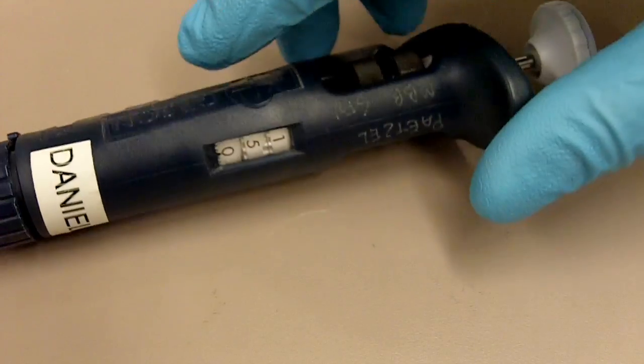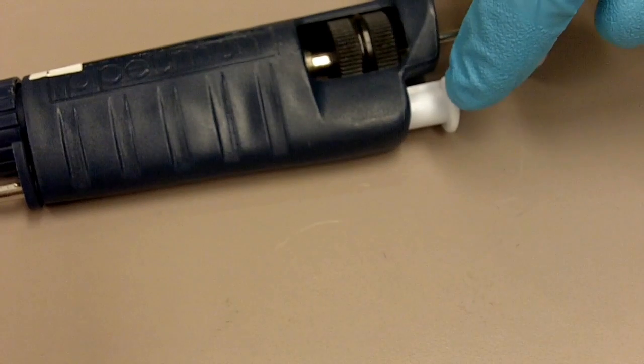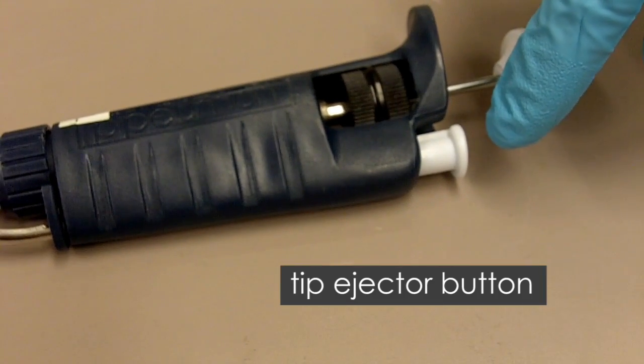And if we go to the back of the pipette, you'll see one button that's here. This button is the tip ejector button.